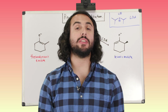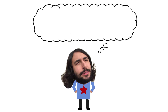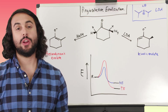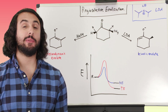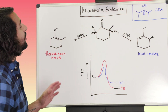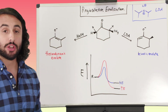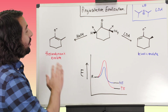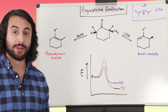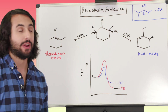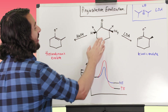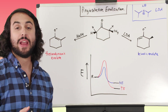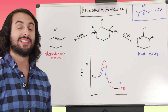Hey, it's Professor Dave. Let's talk about enolization. We know a little bit about enolates — we know how to form them. We can take some ketone or aldehyde — in this case we're going to start with this ketone — and use a strong base to do an acid-base reaction. We grab an alpha proton and form an enolate. But sometimes a ketone can produce different enolates depending on which proton is involved in the acid-base reaction.